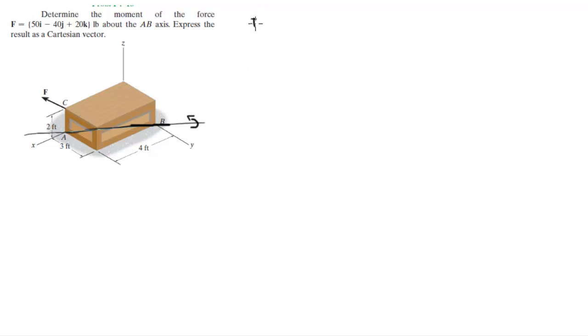So you know that the force is equal to 50 in the i minus 40 in the j plus 20 in the k. Now we need to find the points involved: A is involved, B is involved, and C is involved because it's where the force sits.